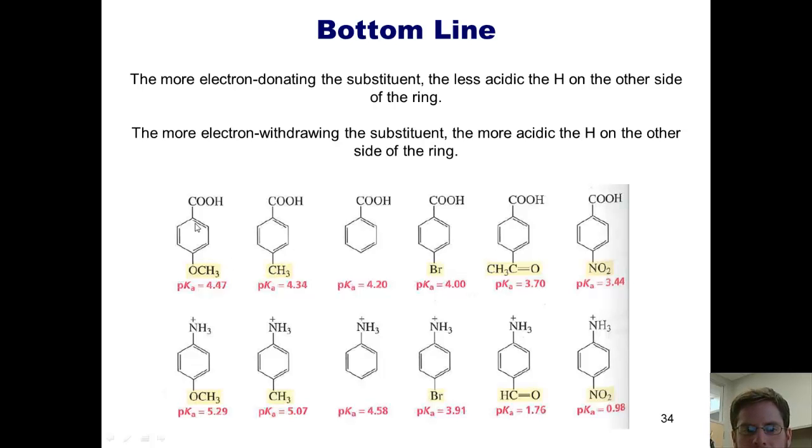Whereas in these donating groups, you've got partial negative charges being pushed here, which decreases the ability of the hydrogen to be deprotonated, because that would put a negative charge on the oxygen here. Similar trends can be observed here with the acidic hydrogens on this ammonium ion.